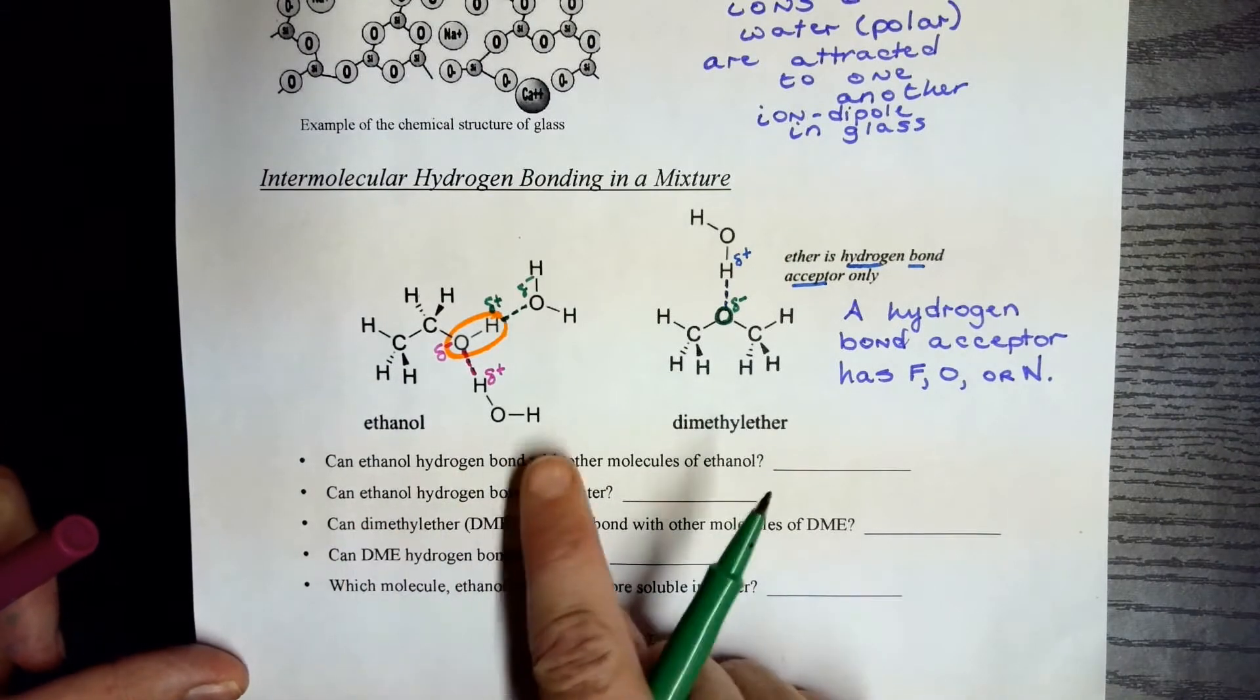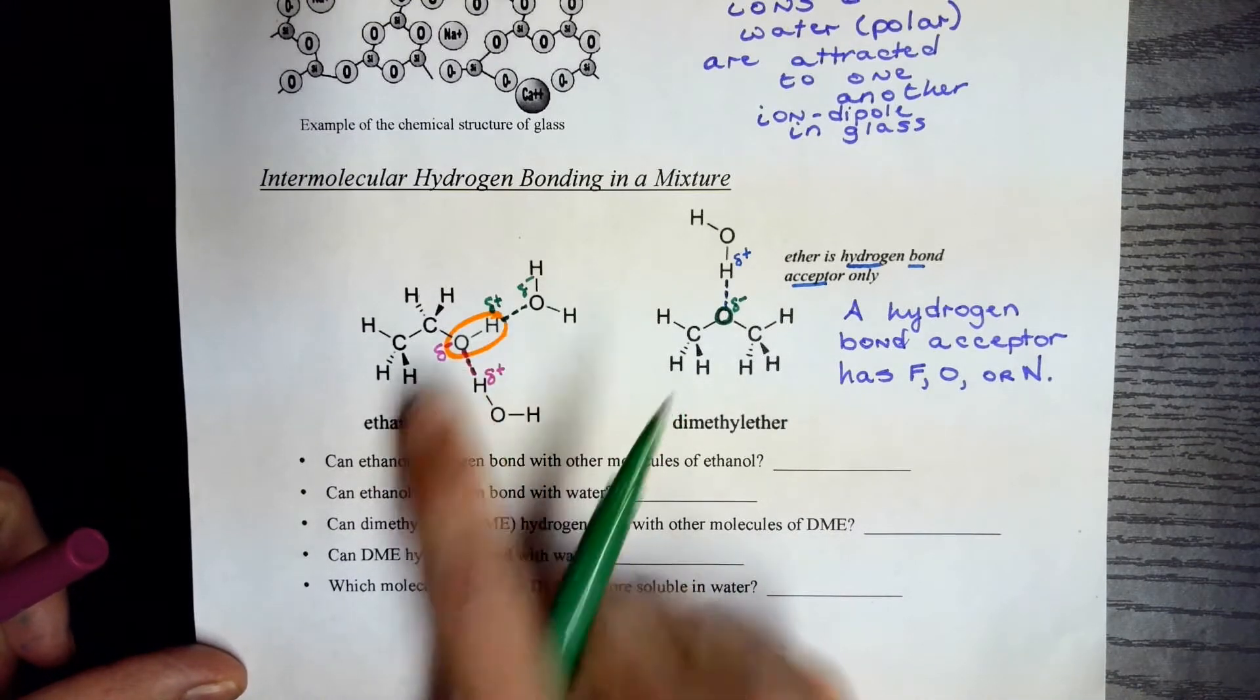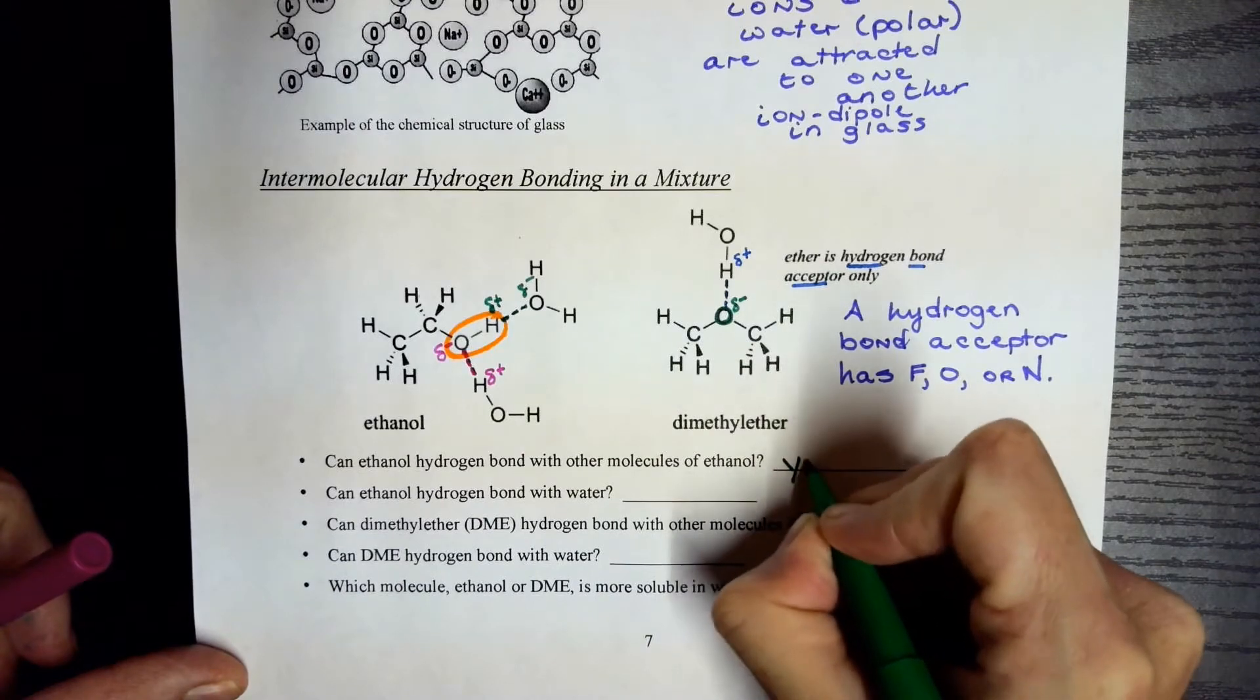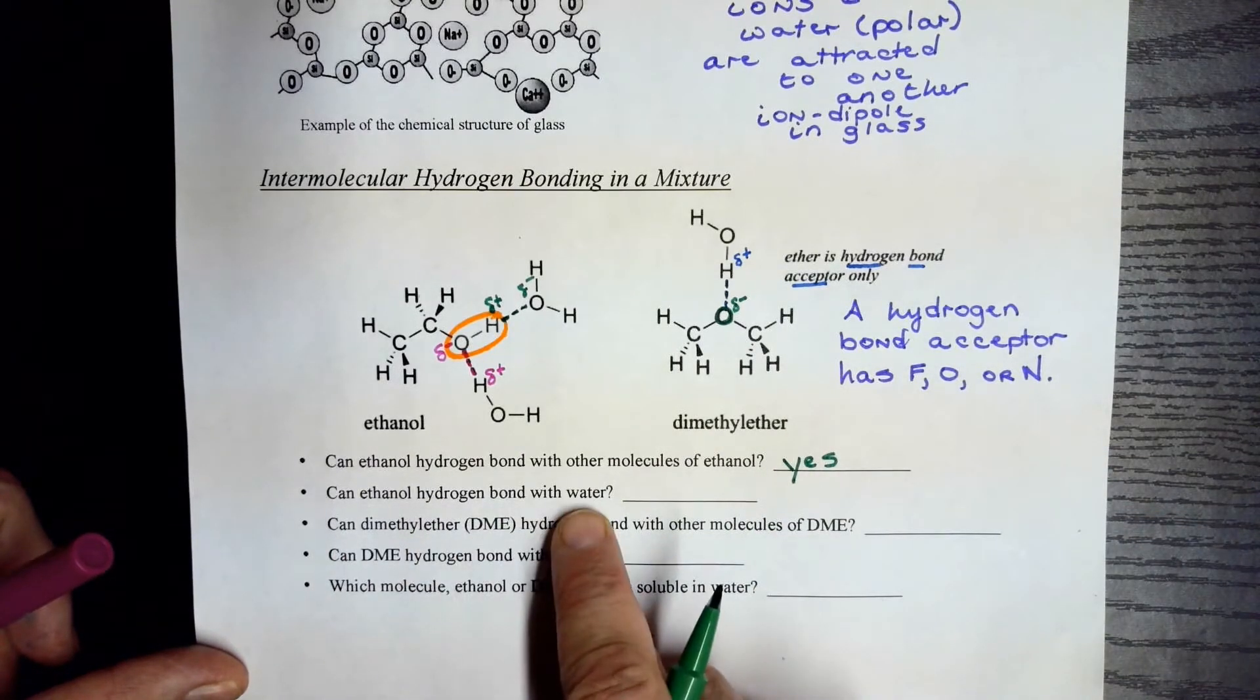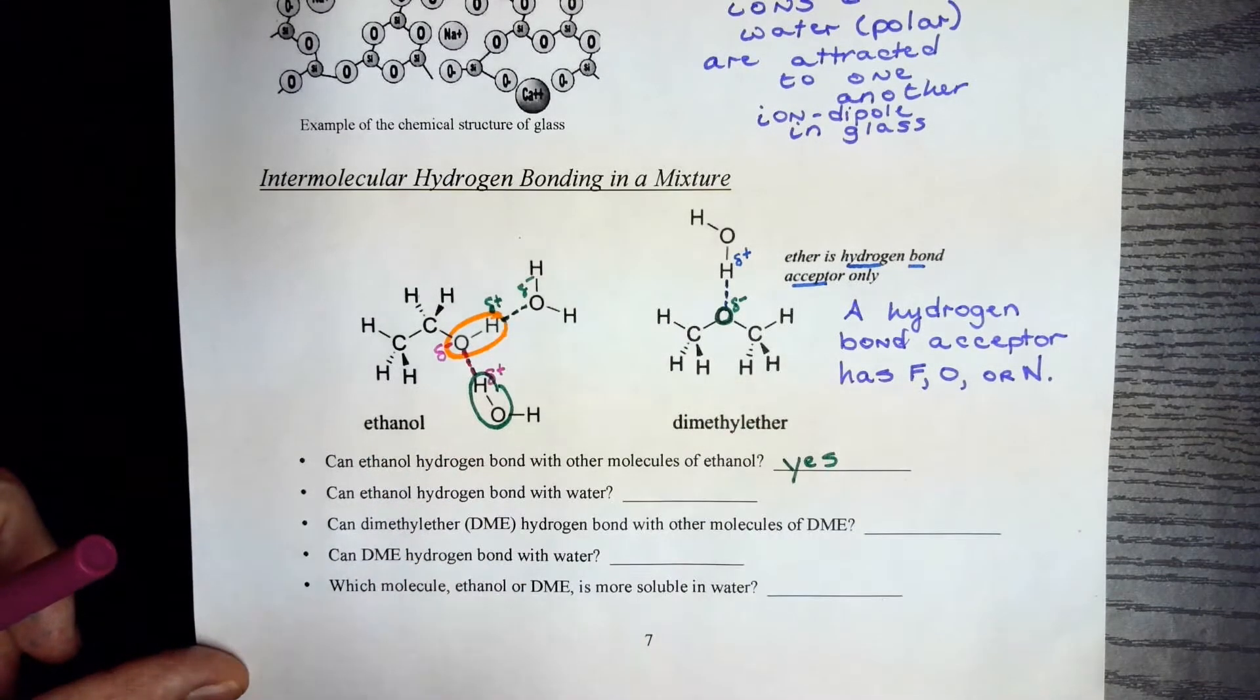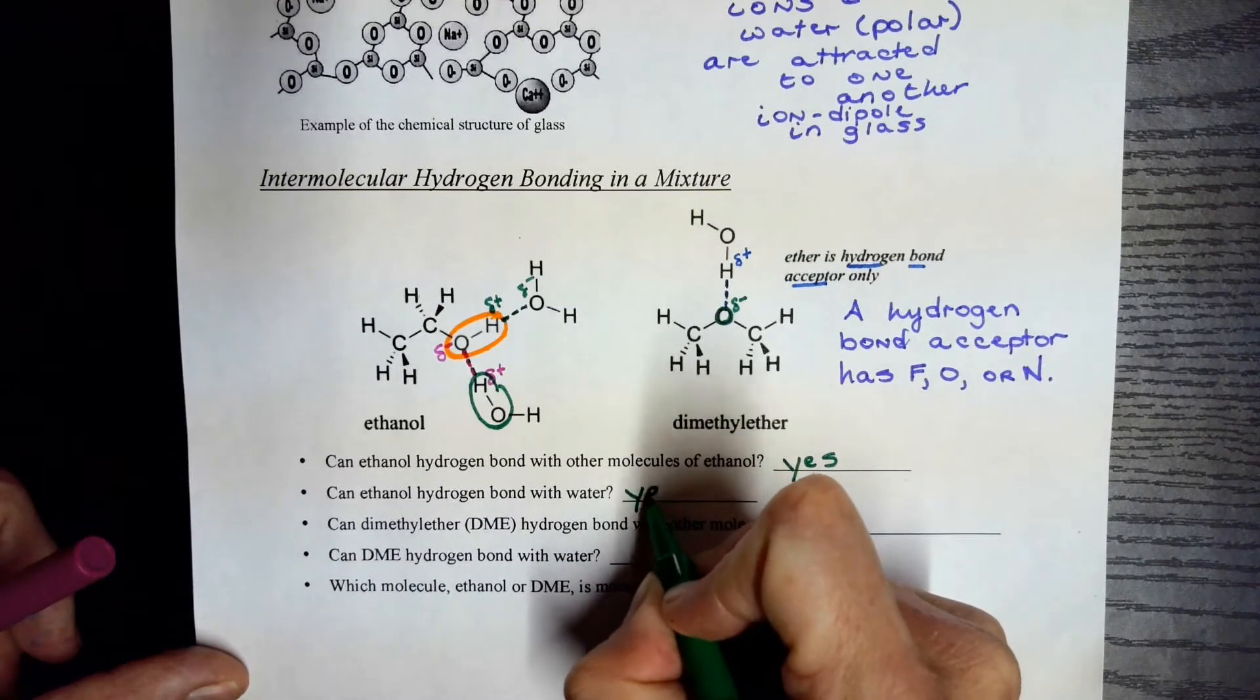Can ethanol hydrogen bond with other molecules of ethanol? Sure. It's got H directly attached to oxygen, so that'll definitely happen. Can ethanol hydrogen bond with water? Absolutely. They both have H directly attached to oxygen, so that will definitely happen as well.